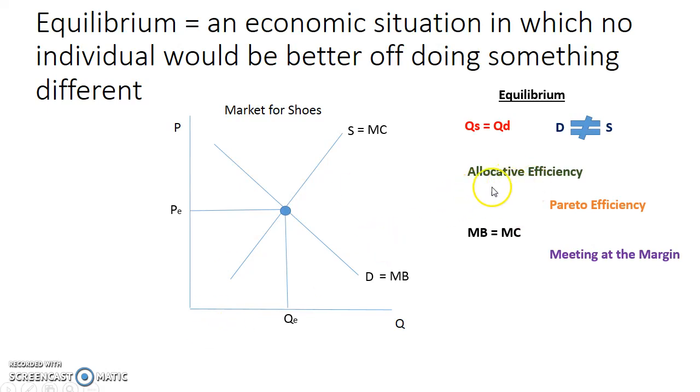Again, that allocative efficiency. Prior to the intersection of the supply and demand curve, the marginal benefit is greater than the marginal cost. If I consume one more unit, I am benefiting. While the distance between the two isn't as great, I'm still adding to my total benefit.